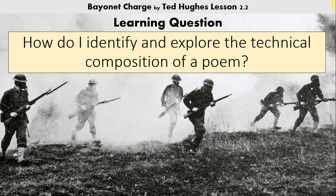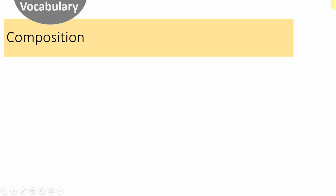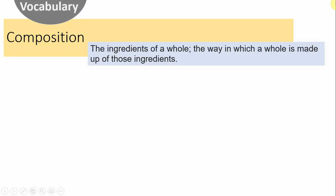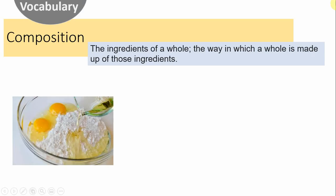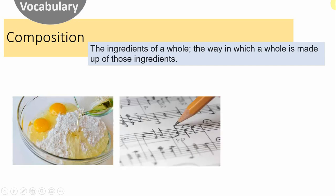A couple of key pieces of vocabulary coming up. Composition, which is the ingredients of a whole, or the way in which a whole is made up of those ingredients. A cake is composed of eggs, flour, butter, in this case oil. Any recipe would be the composition of the dish that you are cooking, the things that will be combined together. A composer writes music, putting notes and rests and stops on the page in a certain order — the composition of the piece that dictates how it will sound.